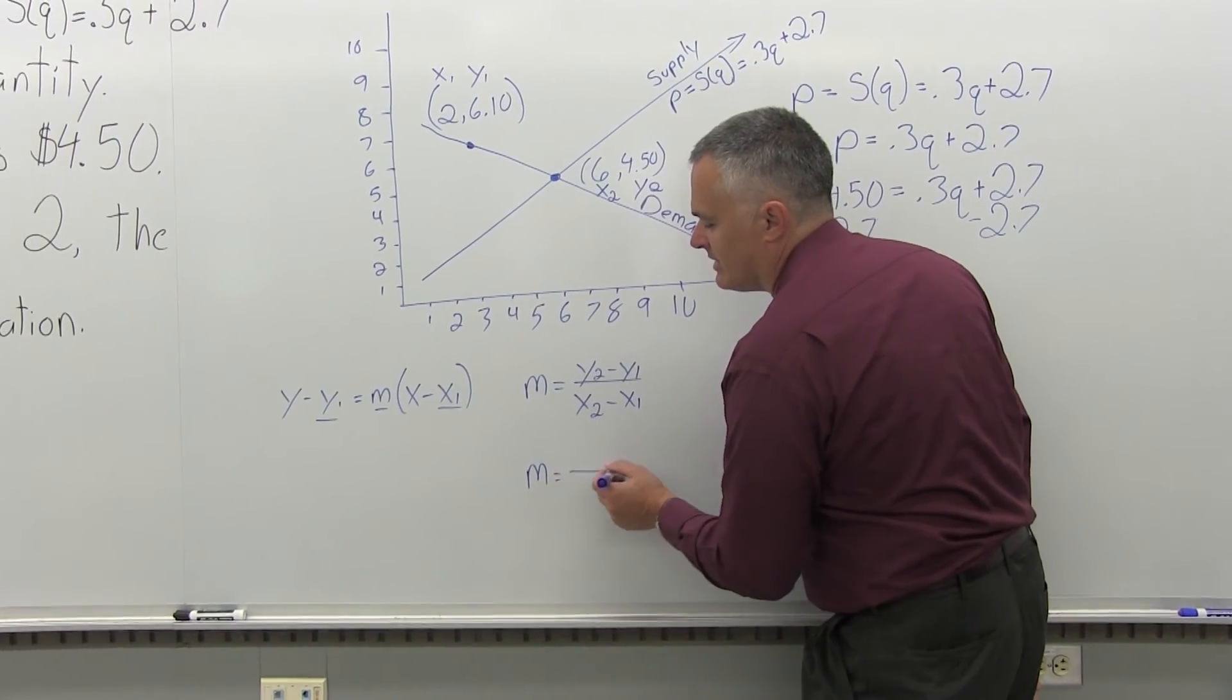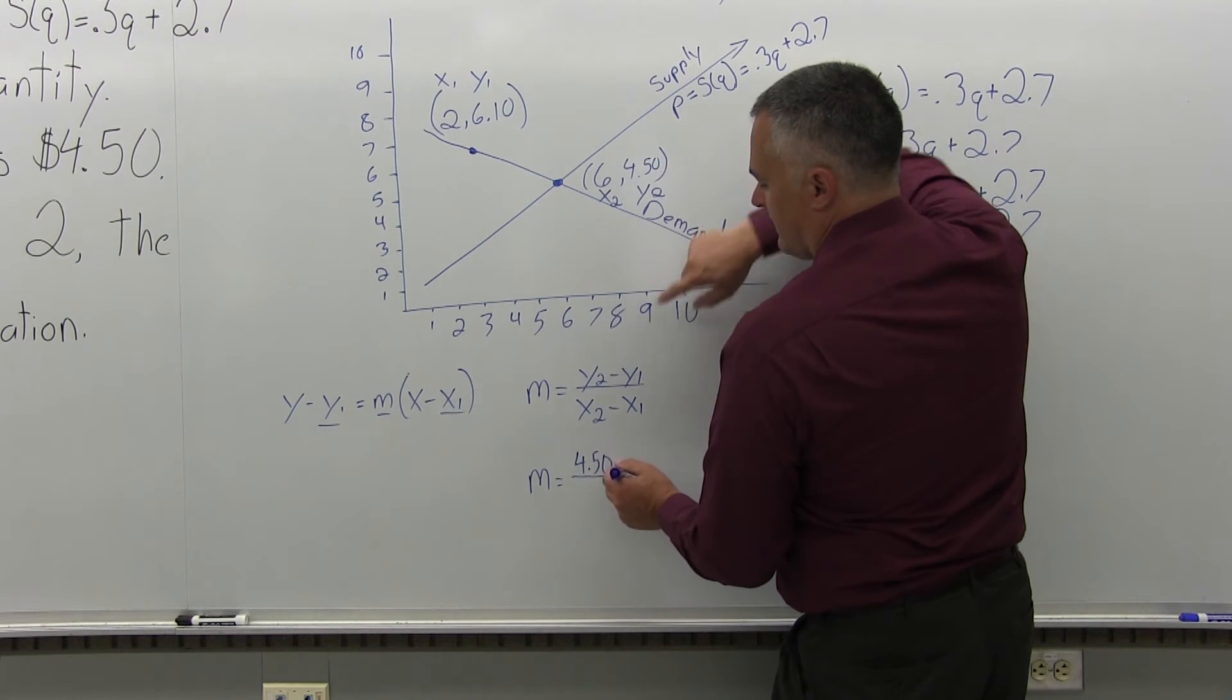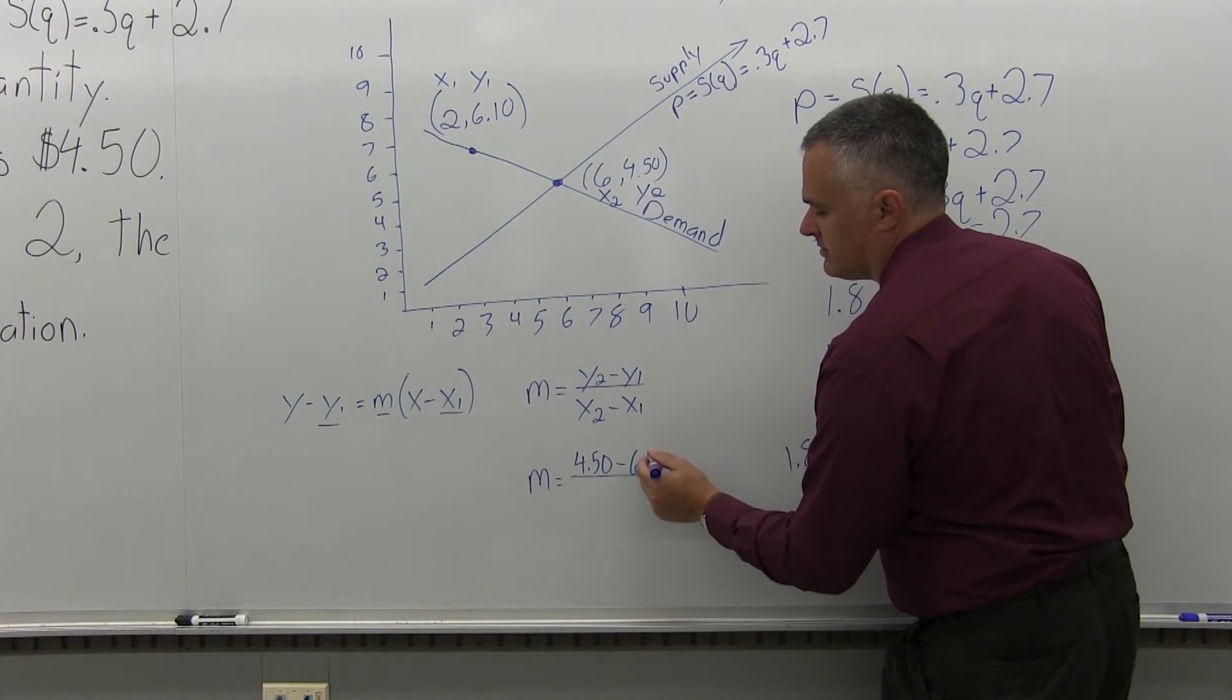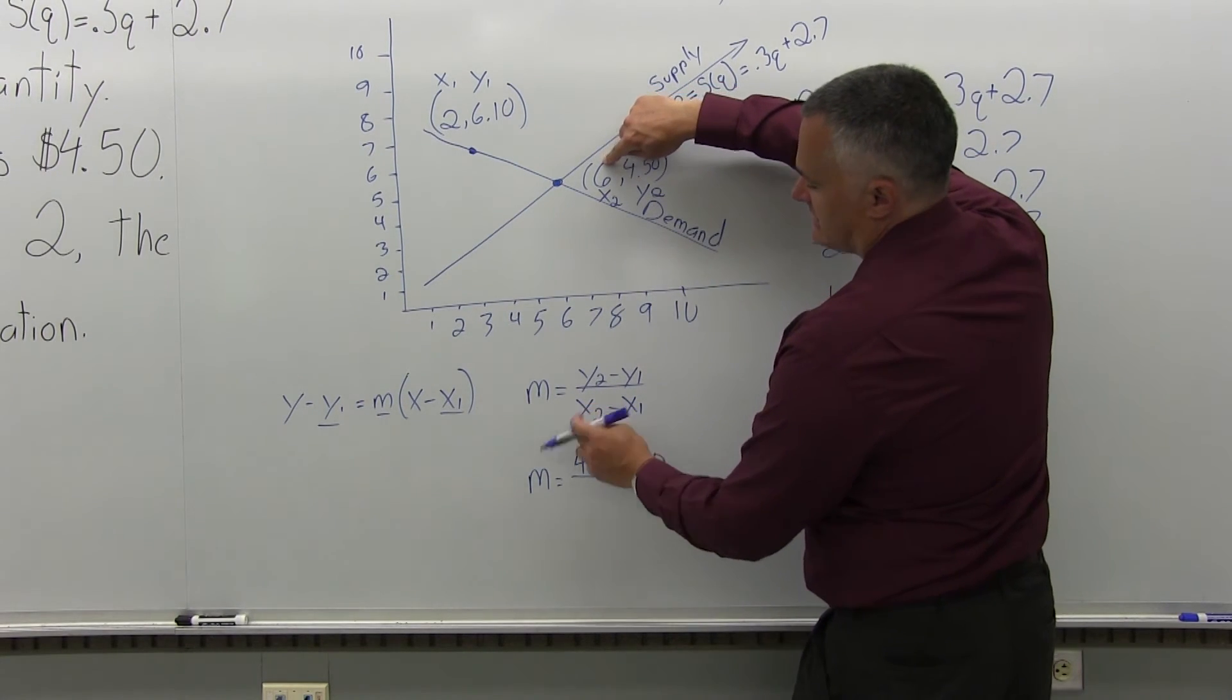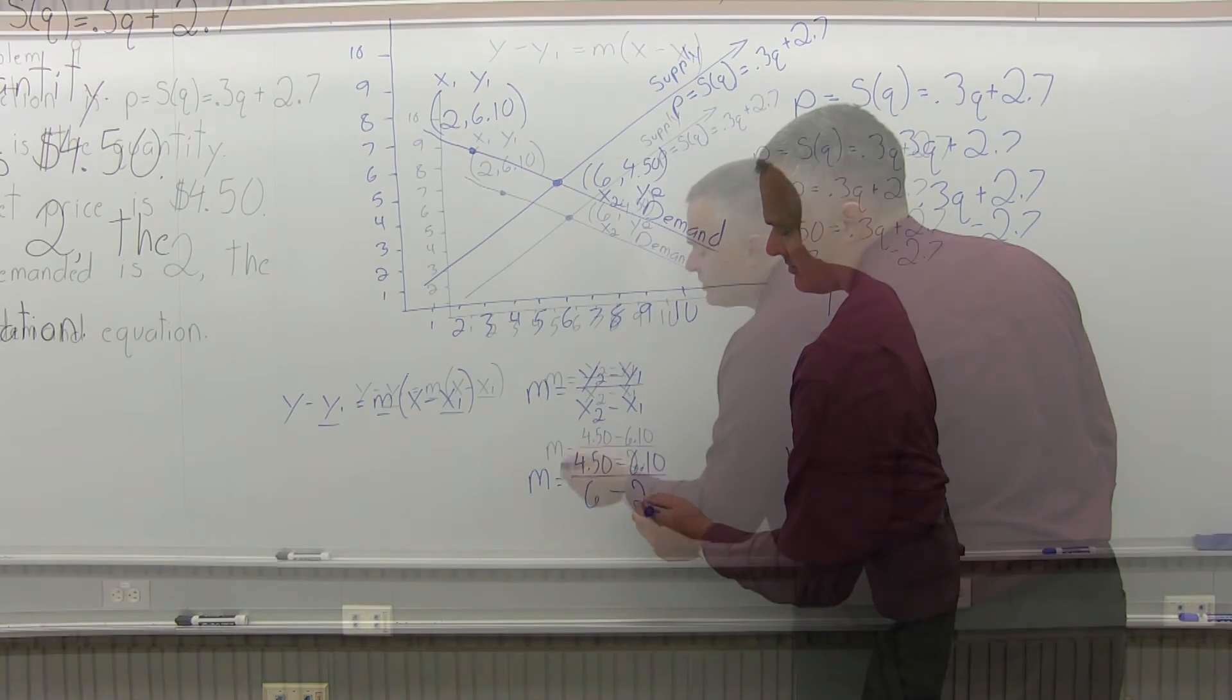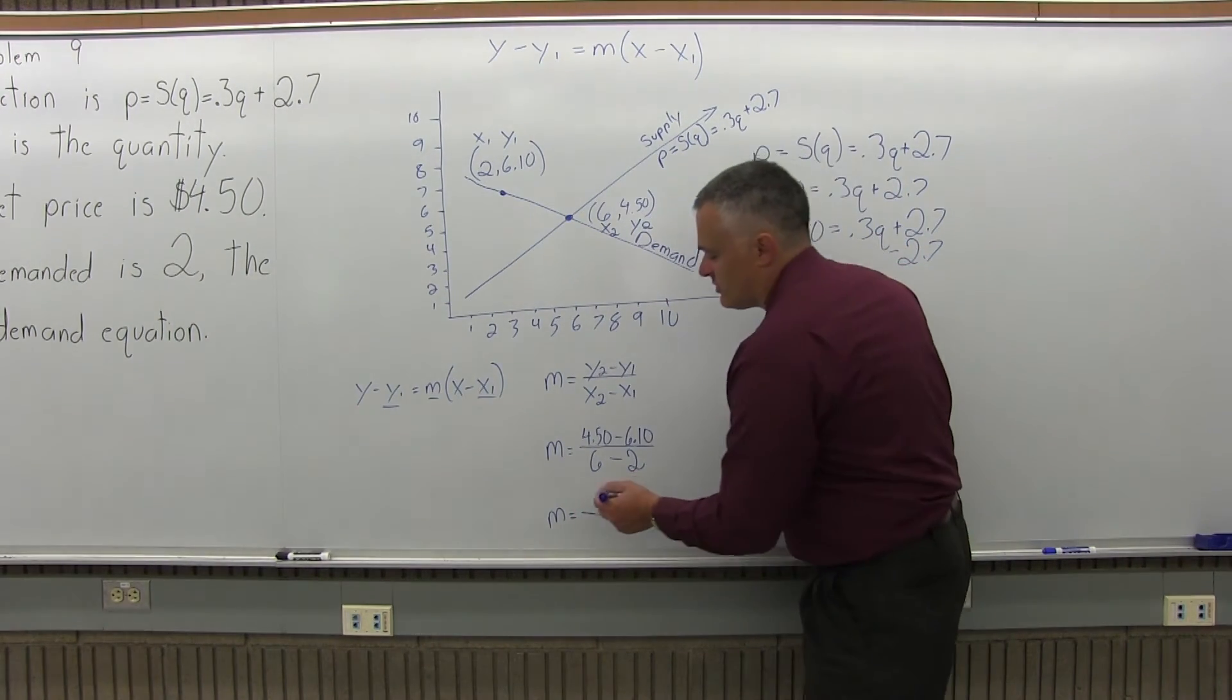I need a value for M, the slope. Let me write M equals Y2 minus Y1 over X2 minus X1. M is Y2, so 4.50 minus Y1, which is 6.10, over X2, which is 6, minus X1, which is 2.